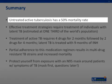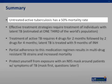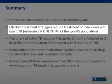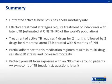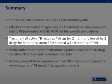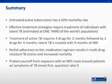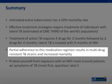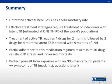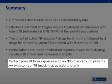In summary, untreated active tuberculosis has a 50% mortality rate. Effective treatment strategies require treating individuals while they have latent TB — and worldwide, we're talking about one third of the world's population. Treatment of active TB requires four drugs for two months followed by two drugs for four months, whereas treatment of latent TB requires INH for nine months. Partial adherence to medication regimens is what produces multidrug-resistant TB strains, and this has a dramatically increased mortality rate. You can protect yourself from exposure by using an N95 mask when having known contact with a patient, or by asking the patient to wear a surgical mask if you're even considering the possibility of their having TB. We say, mask first and questions later.